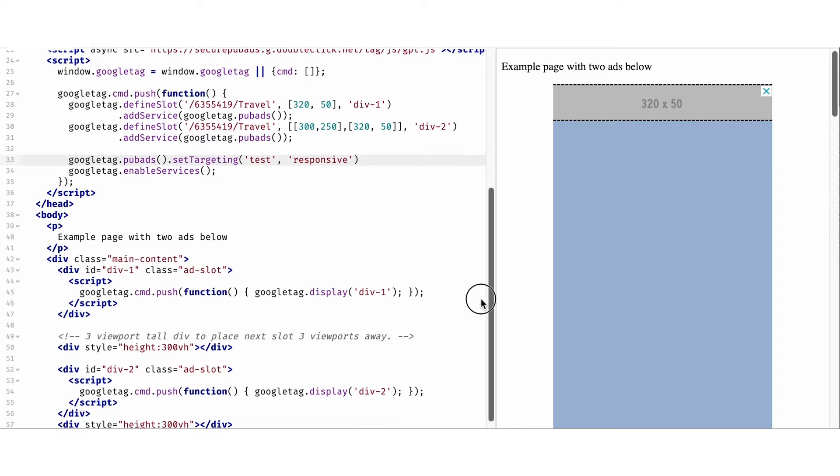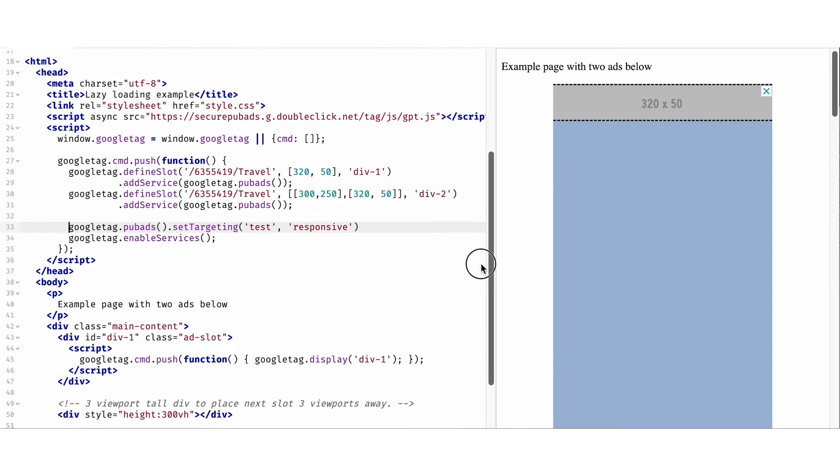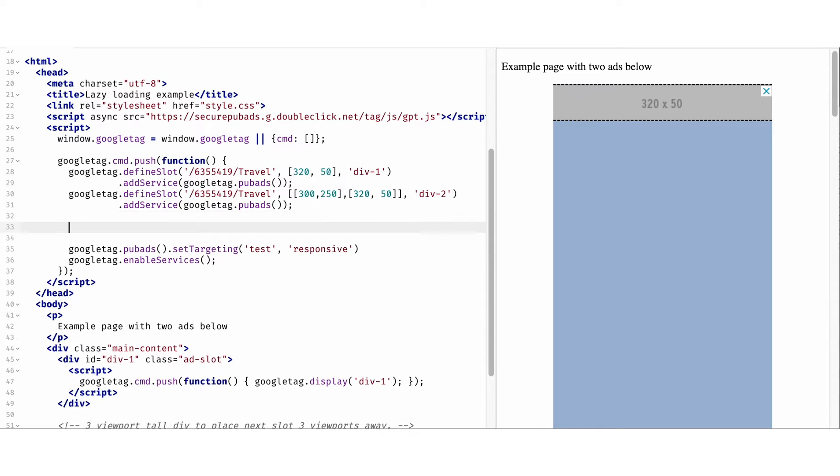Now, we show you how you can enable lazy loading by doing some simple coding. Lazy loading is configured at page level, so even though this example has 2 ad slots, the lazy load settings only need to be set once. We insert the code before the enable services part.